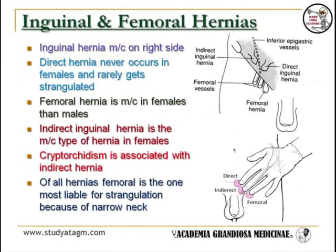A hernia is the passage of a peritoneal sac, with or without abdominal contents, through a site of congenital or acquired weakness in the abdominal wall. It consists of a peritoneal sac, contents of the sac, and the hernia ring. Inguinal hernia is most common on the right side.